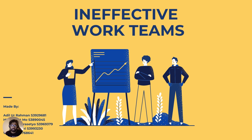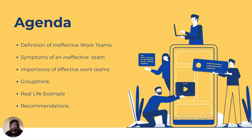Hello, and welcome to our presentation on ineffective work teams, presented by myself, Adil, Nick, Catherine, Timothy, and Will Taro. Our presentation today will consist of the following agenda: the definition of ineffective work teams, symptoms of ineffective teams, the importance of effective teams, groupthink, real-life examples — which are the OceanGate submarine implosion and the Tesla Model S development — and finally, recommendations on how managers can overcome ineffective work teams.